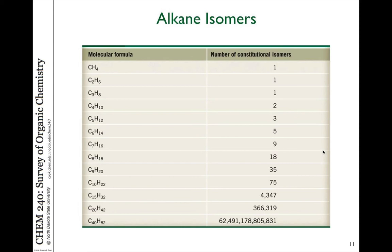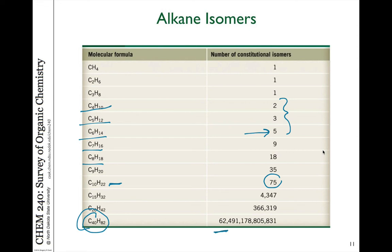Butane has two possible isomers, pentane has three, and hexane has five. The number of possible isomers increases exponentially as you increase the number of carbons — there are just that many more statistical combinations. By the time we get to 10 carbons — decane — there are 75 different isomers. Perhaps I should assign that as a homework assignment. If you go up to 40 carbons, there are over 62 trillion possible combinations — the number of different organic molecules is enormously large.